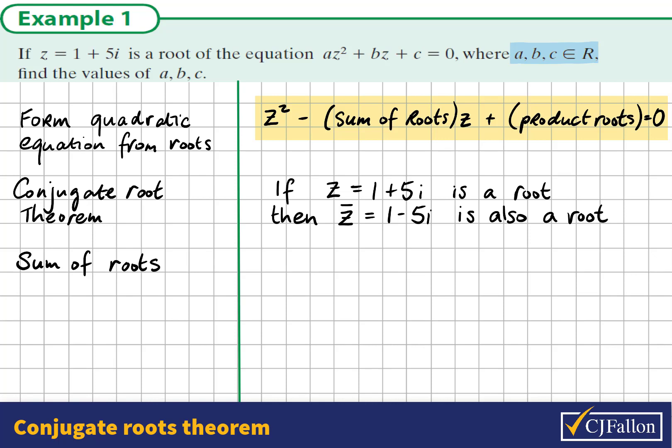Let's work out the sum of the roots first. If we add z and z bar, we have 1 plus 5i added to 1 minus 5i. This adds up to 2, so the sum of the roots is 2.